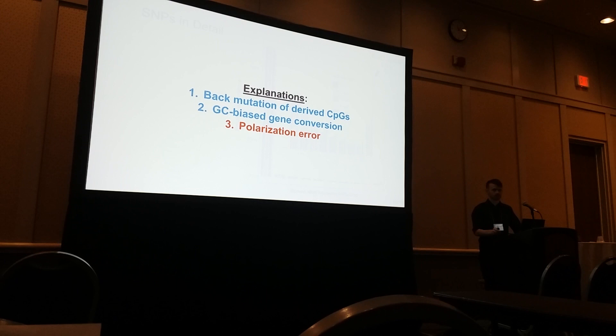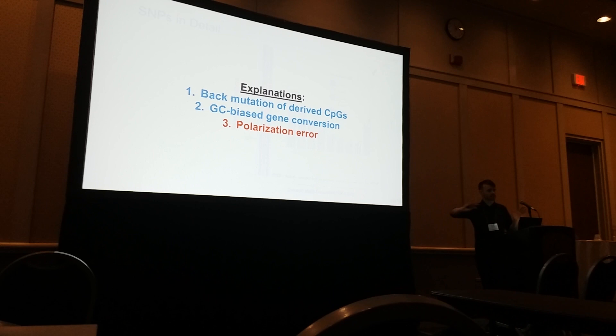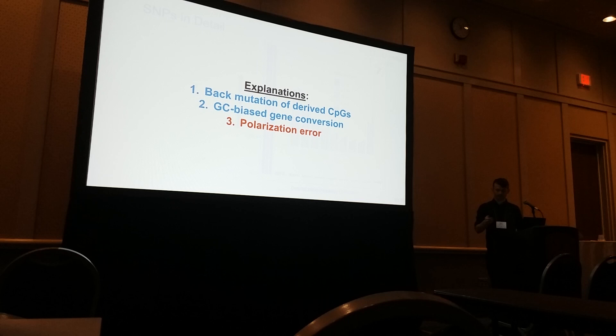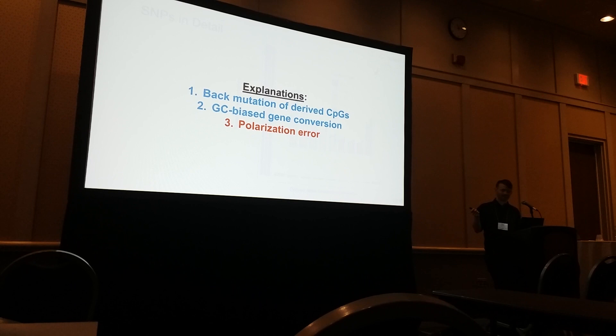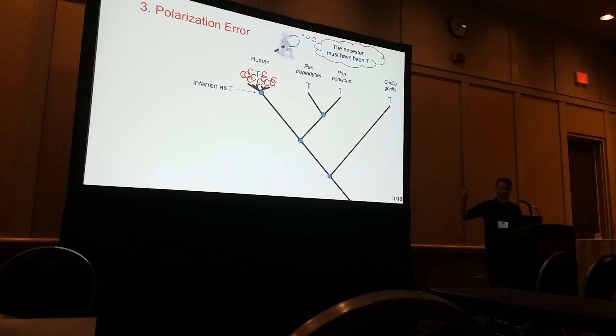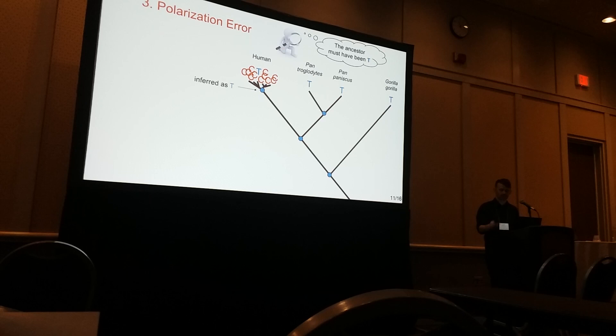So back mutation is one possibility. The second is GC-biased gene conversion, which has the effect of moving the entire spectrum to the right because it increases the fixation probability of those variants. And then finally, polarization error — meaning misclassification of the ancestral state, that is, which of the two alleles was the ancestor. This is what I'll call the parsimony approach: if bonobo, chimp, and gorilla all share the T, we consider that the most likely ancestral state.